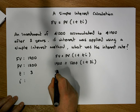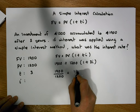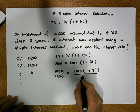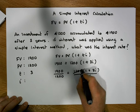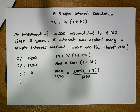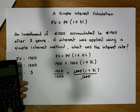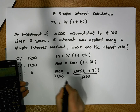So we have 1,900 divided by 1,200 equals 1,200 times one plus 3I, divided by 1,200. The 1,200 on the right-hand side cancels out, so we're left with: 1,900 divided by 1,200 gives us a value of 1.58, rounded to two decimal places. So now we know 1.58 must equal one plus 3I.